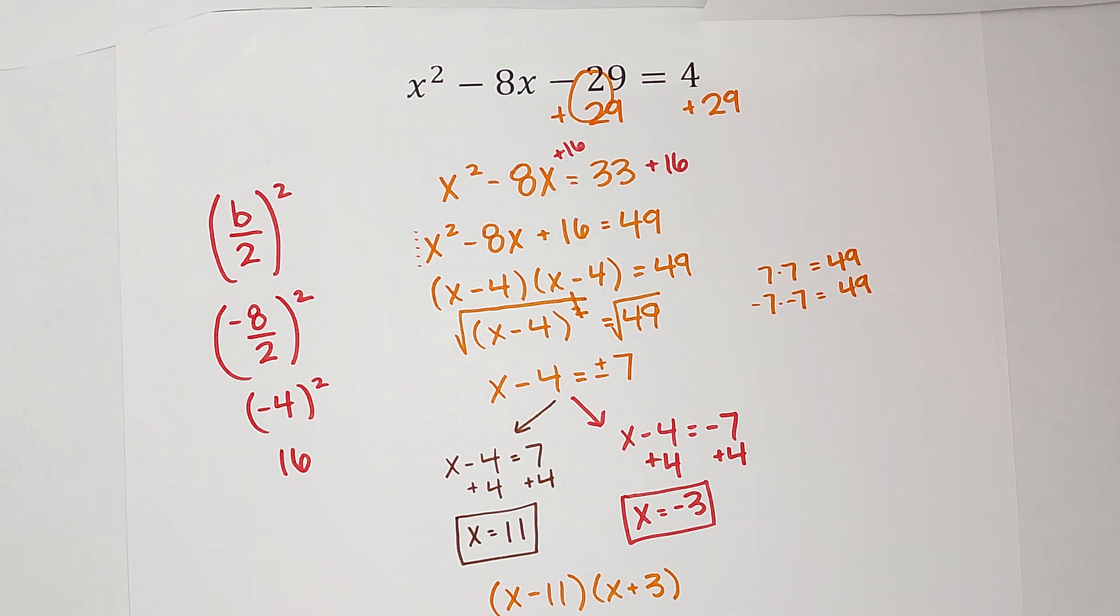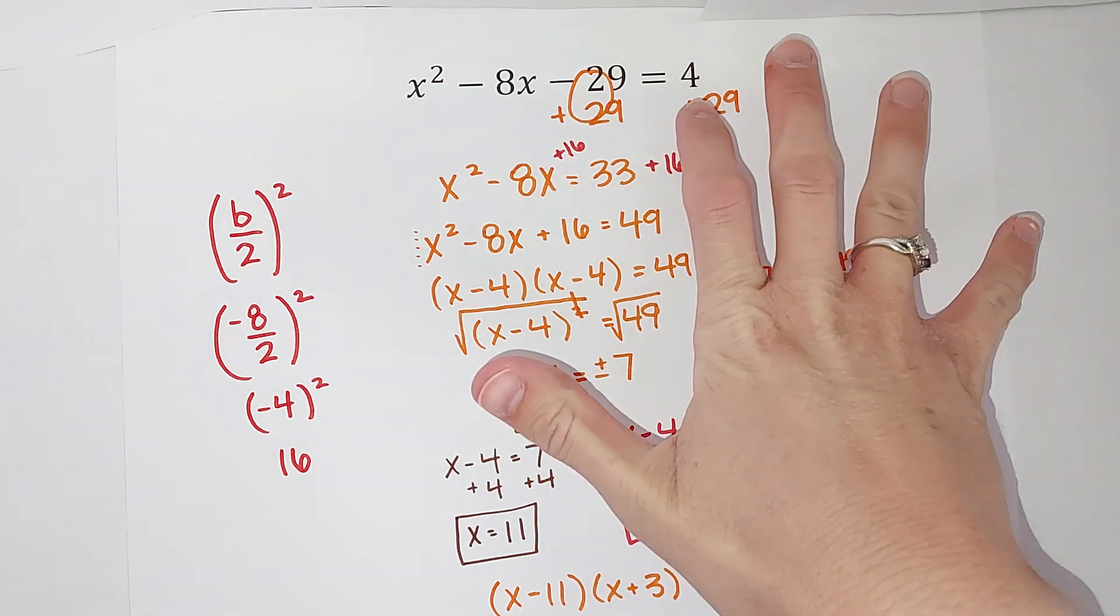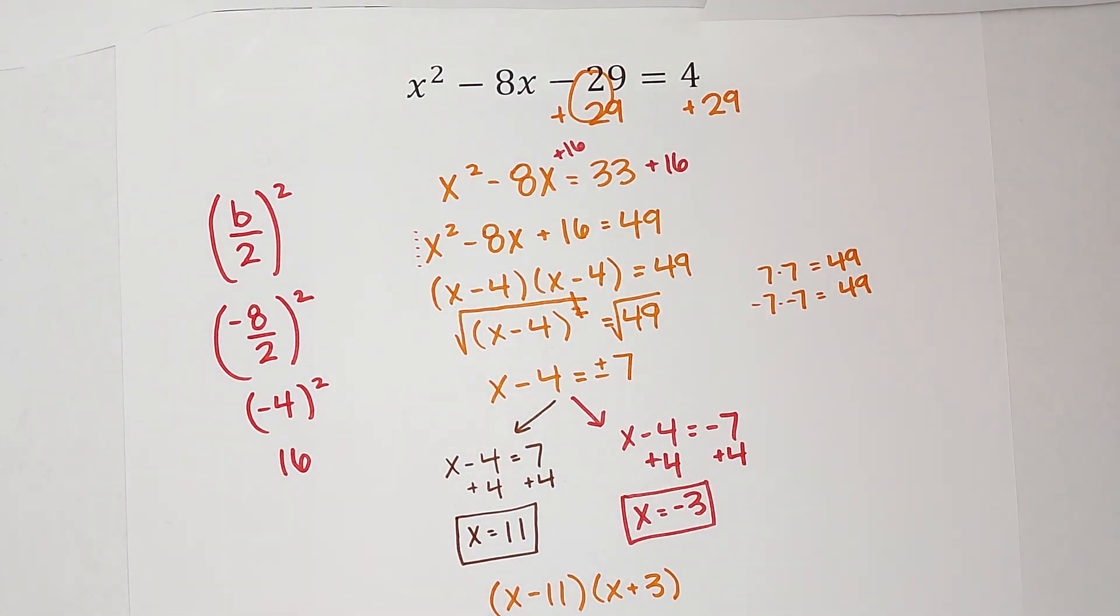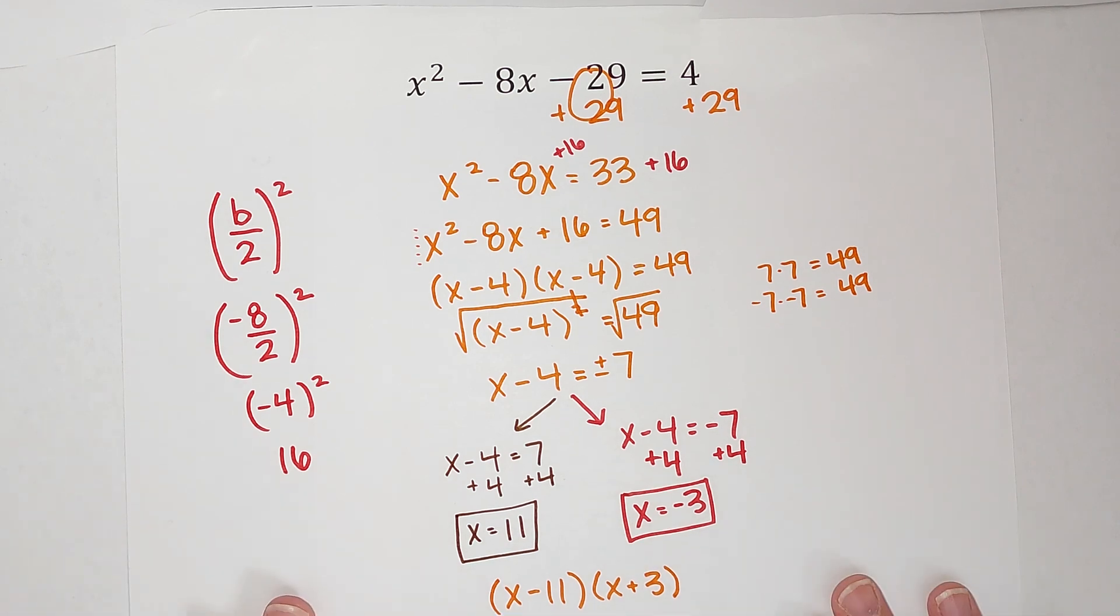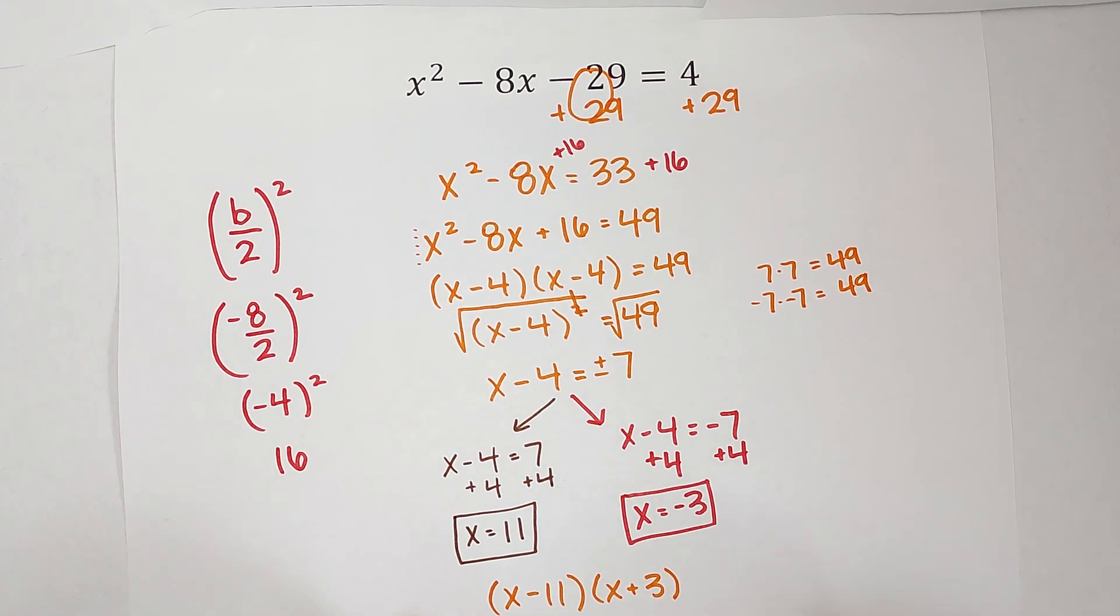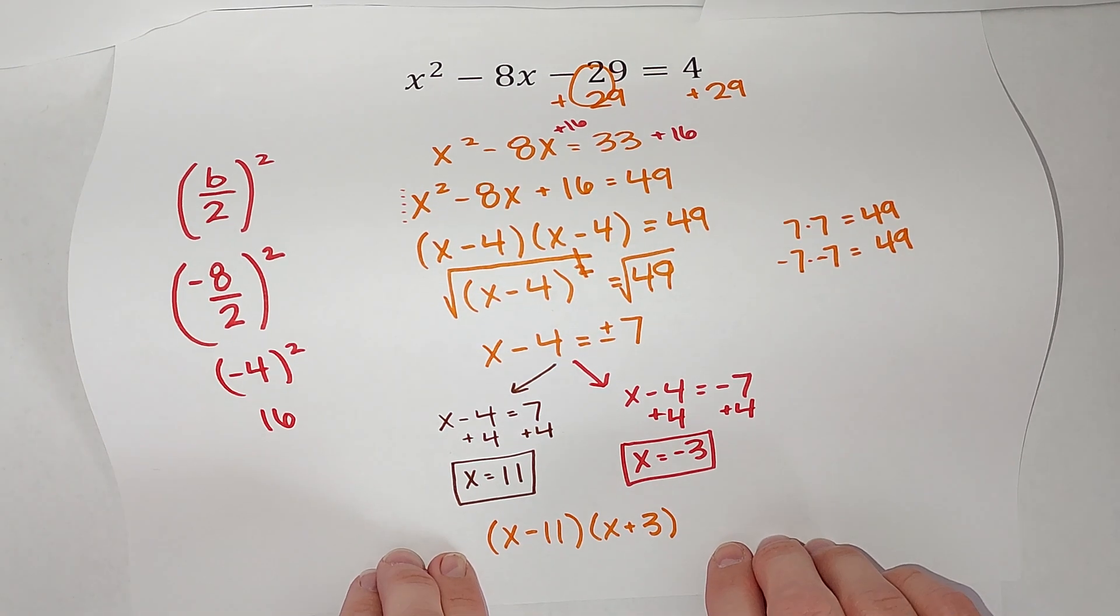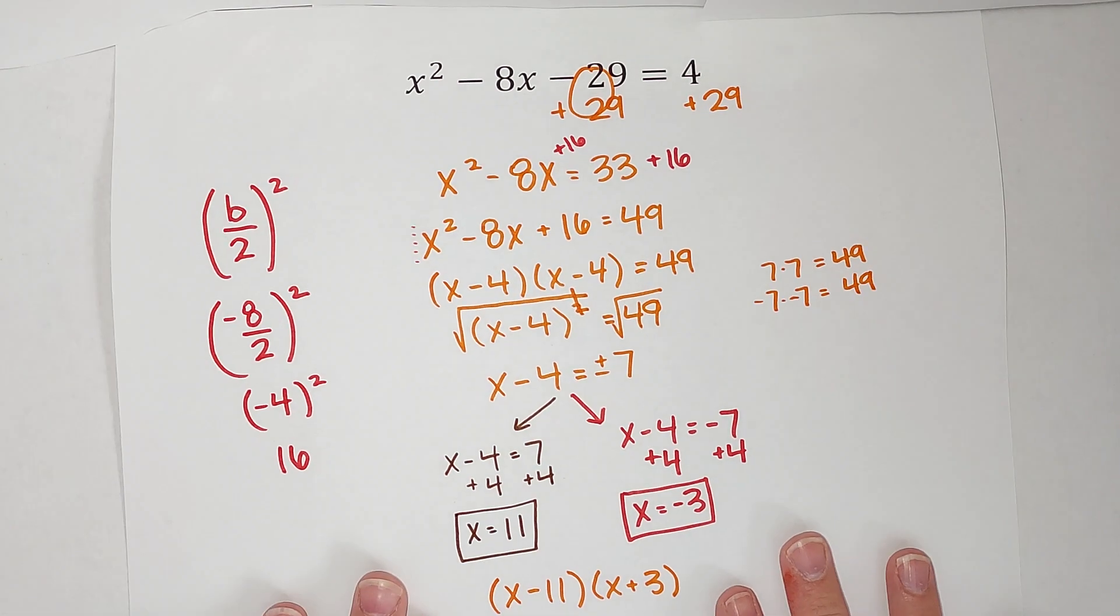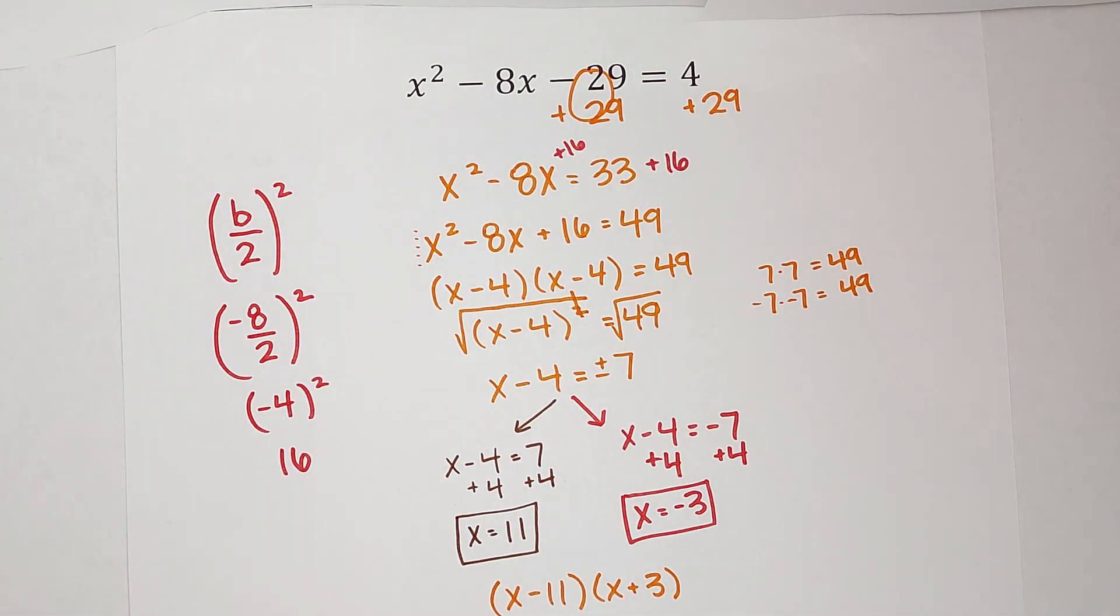You might be thinking, all right, internet lady, if I had just from the beginning subtracted 4 from both sides I could have just factored it like normal. This is true, but I wanted to show you completing the square where the numbers came out pretty. They will not always come out pretty. In fact, a lot of times, most of the time when you are using completing the square, it will be because it can't factor pretty.